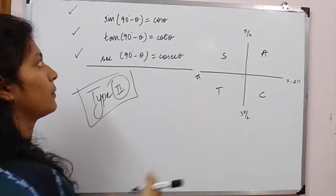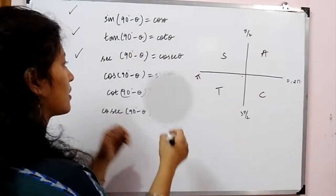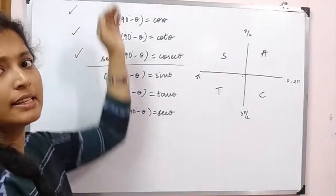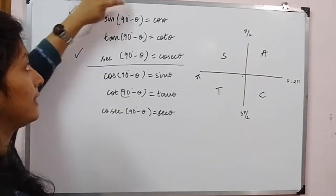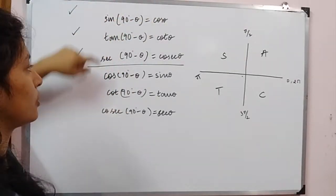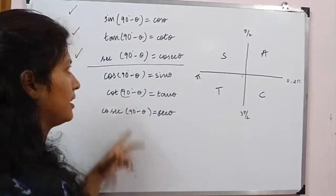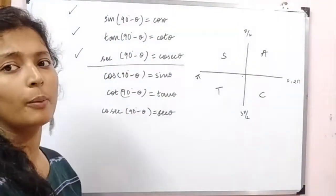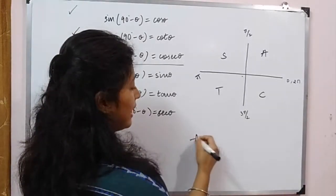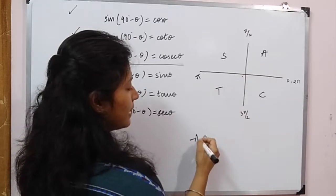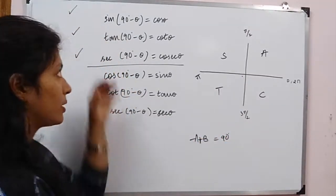Now let's solve it as a question — take the left side and right side. Sign 90 degrees and cos theta. Cos 90 degrees relates to the sine. They are related to complementary ratios, based on complementary angles. Which angles are complementary? That is, when their sum is 90 degrees. When angles A and B sum to 90 degrees, we call them complementary angles.